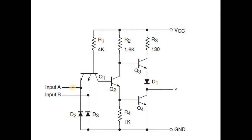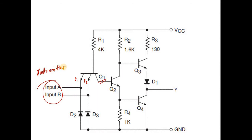This is what a NAND gate looks like. We see that at the inputs there are more than one input, A and B. The voltage will be applied at terminals A and B, and these are applied to emitters E1 and E2. Depending on the number of inputs, the number of emitters will also be different.